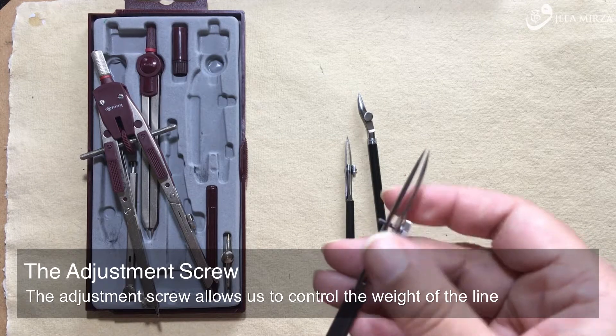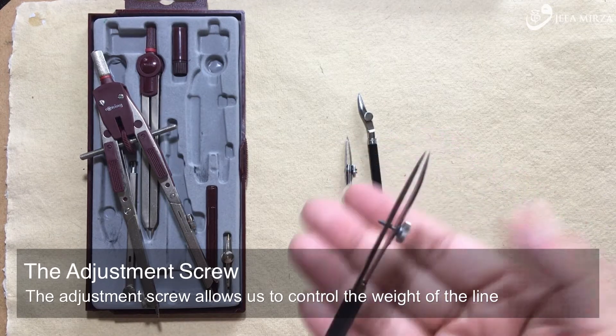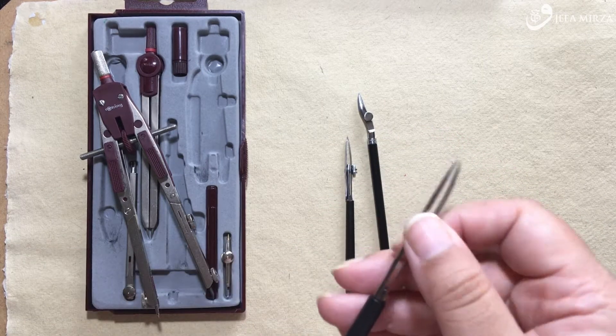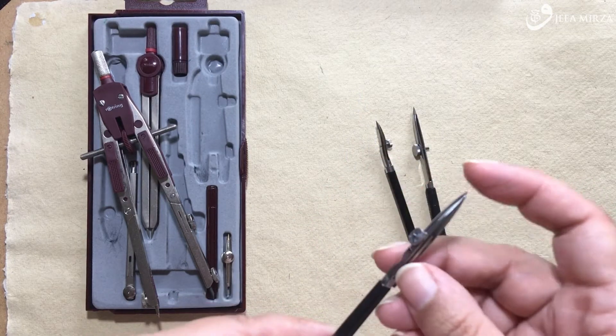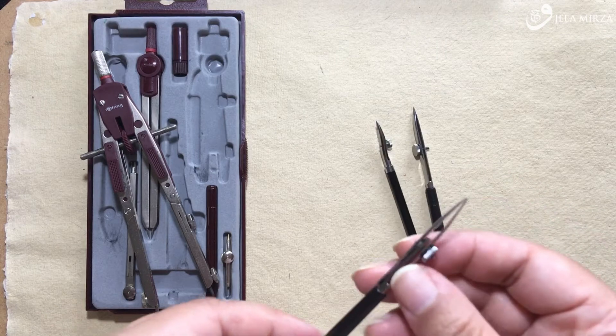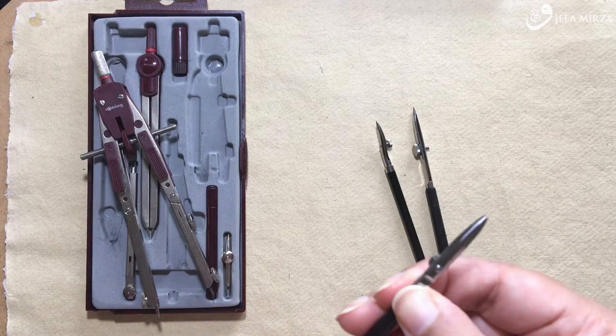Essentially, the way it works is we insert our liquid medium into the space between the two arms. We use the screw to adjust the size of the aperture, so how much ink will flow, and that really determines the weight of our line.